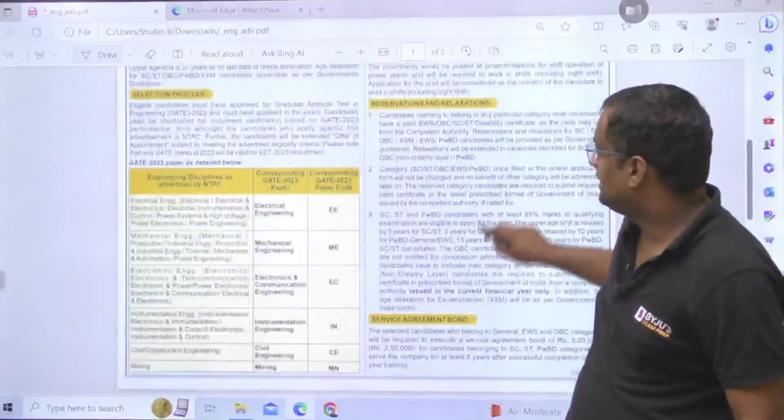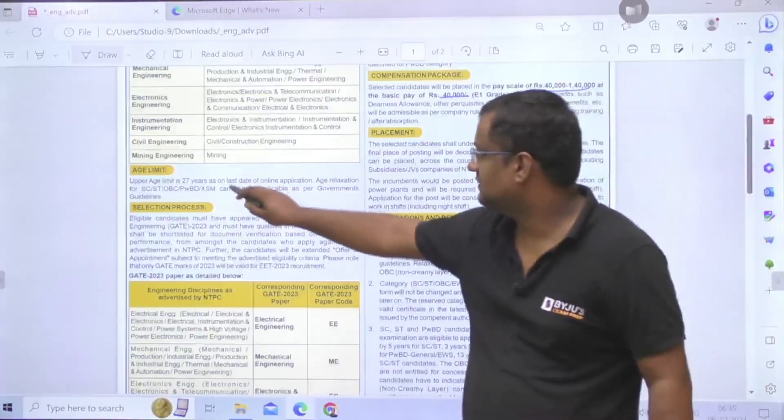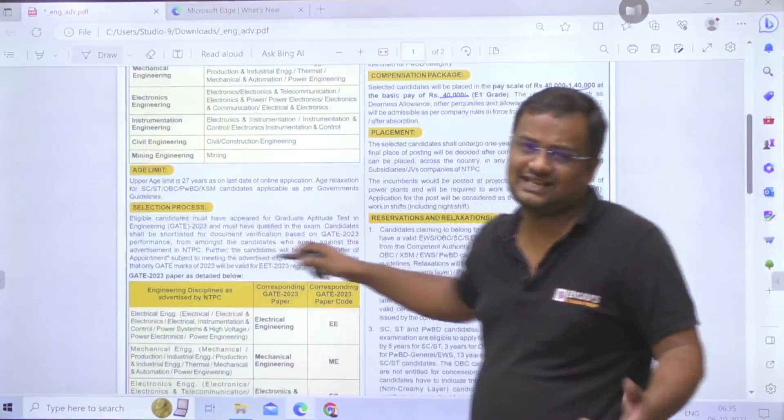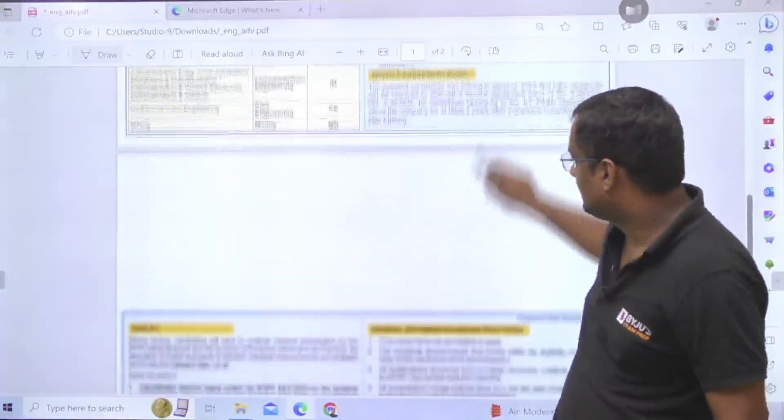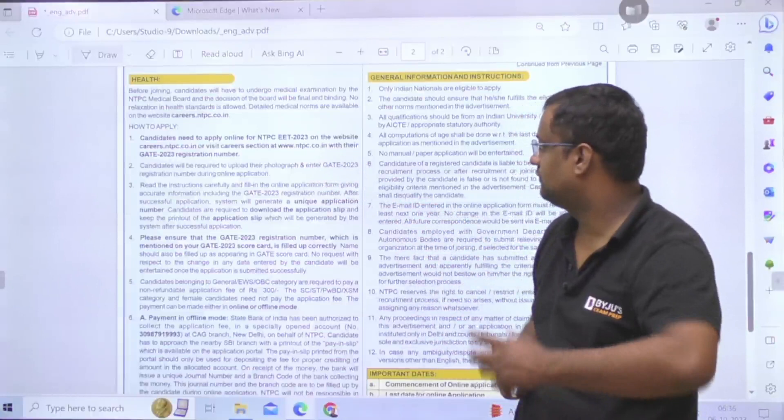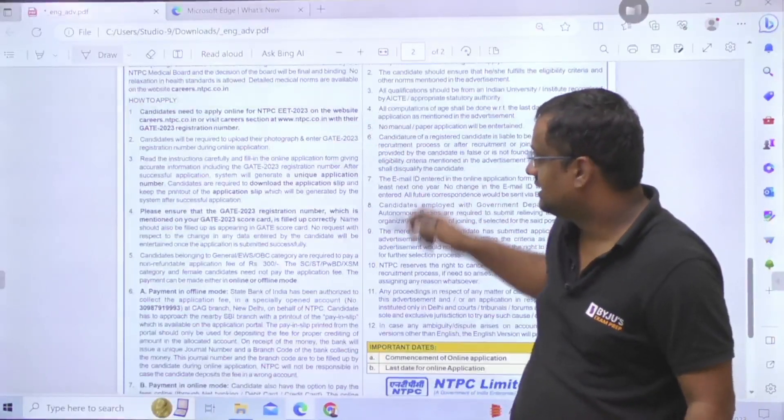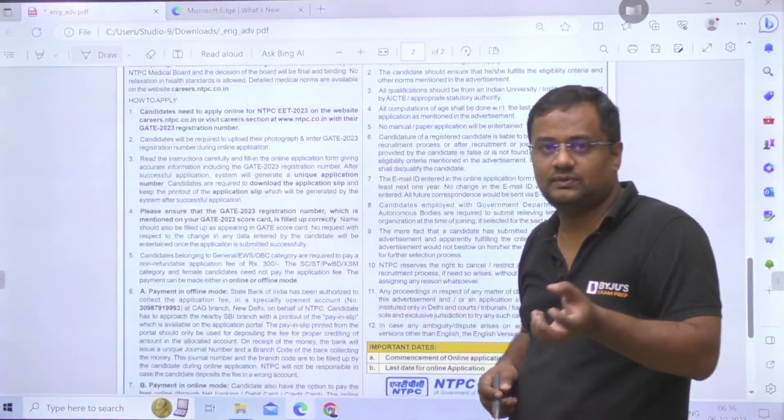Age should be less than 27 years, and relaxation for other categories as per the government norms. Now how to fill this form? You can go to www.ntpc.co.in and fill the registration there along with your GATE 2023 registration number, and after that whatever the process will be there, you have to follow that.